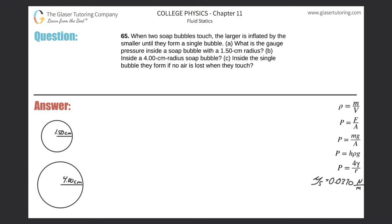Number 65: When two soap bubbles touch, the larger is inflated by the smaller until they form a single bubble. Letter A asks, what is the gauge pressure inside a soap bubble with a 1.5 centimeter radius? Here's the bubble, and to find the pressure inside a bubble, we need this particular formula.